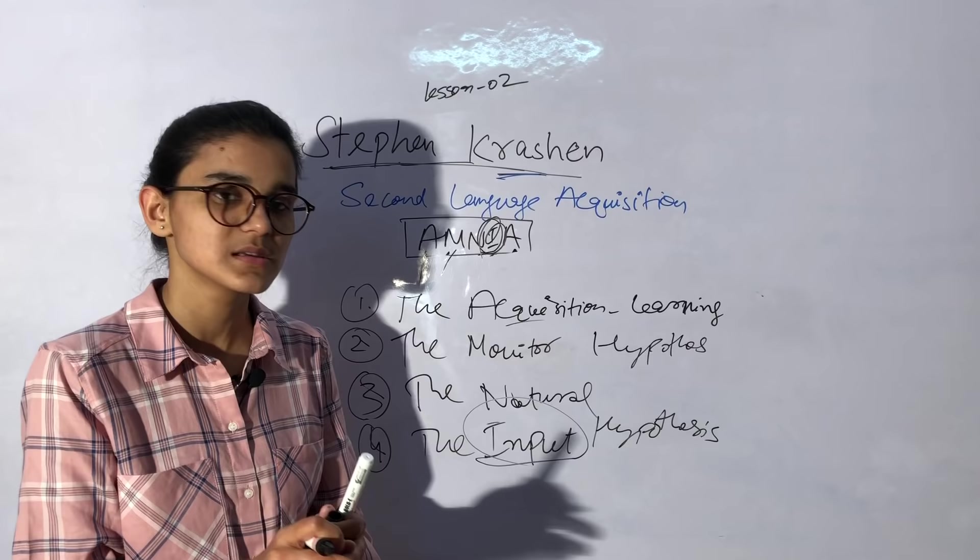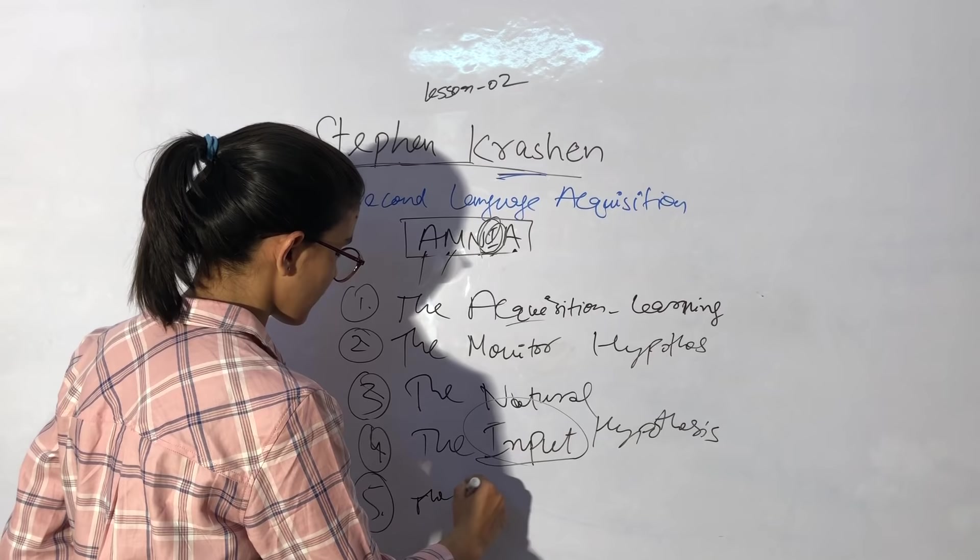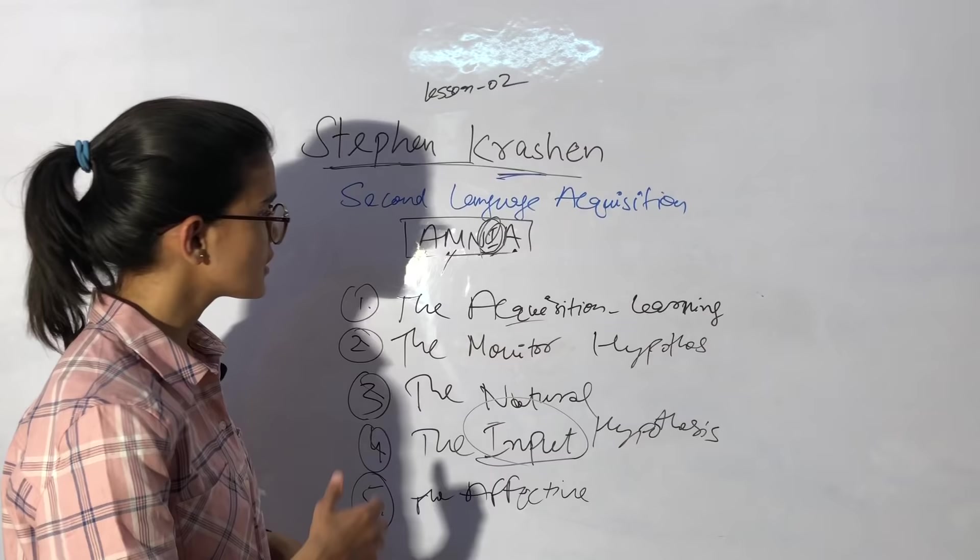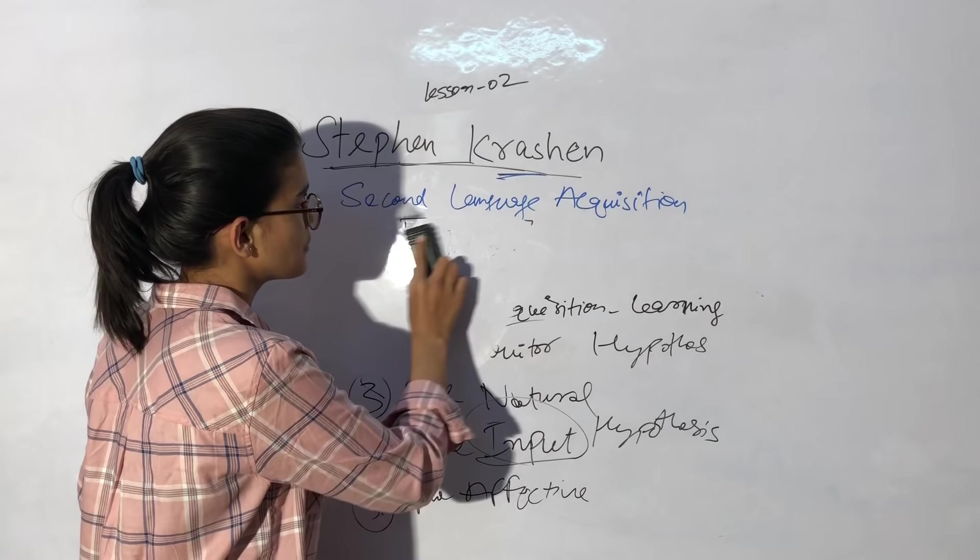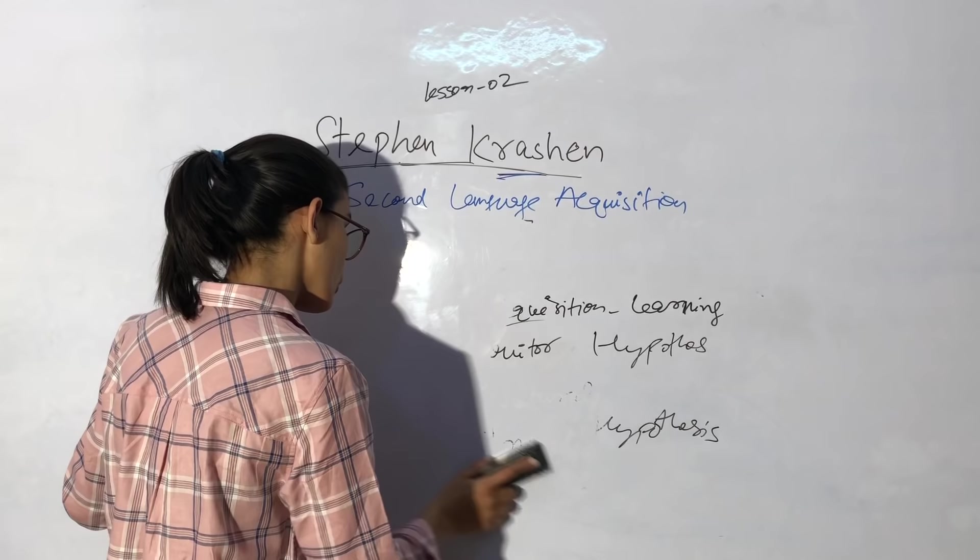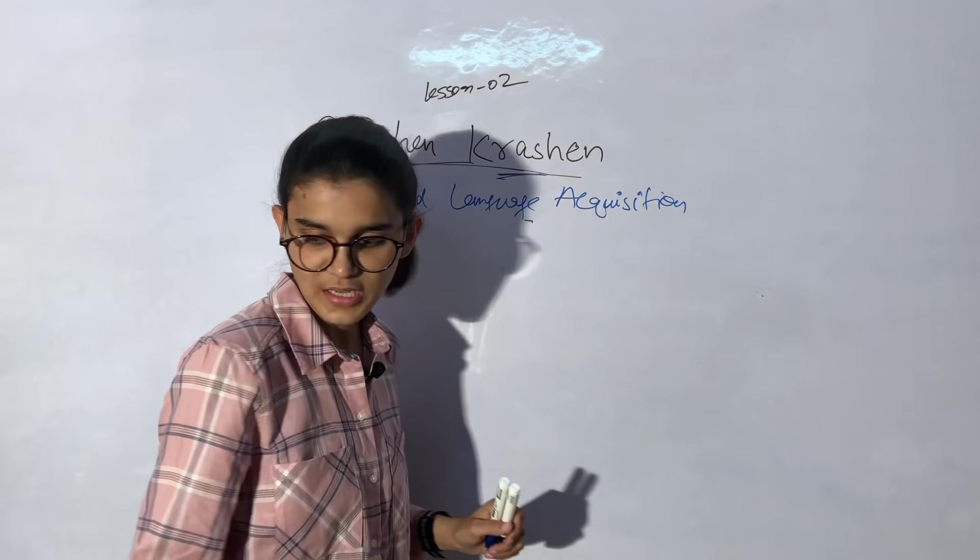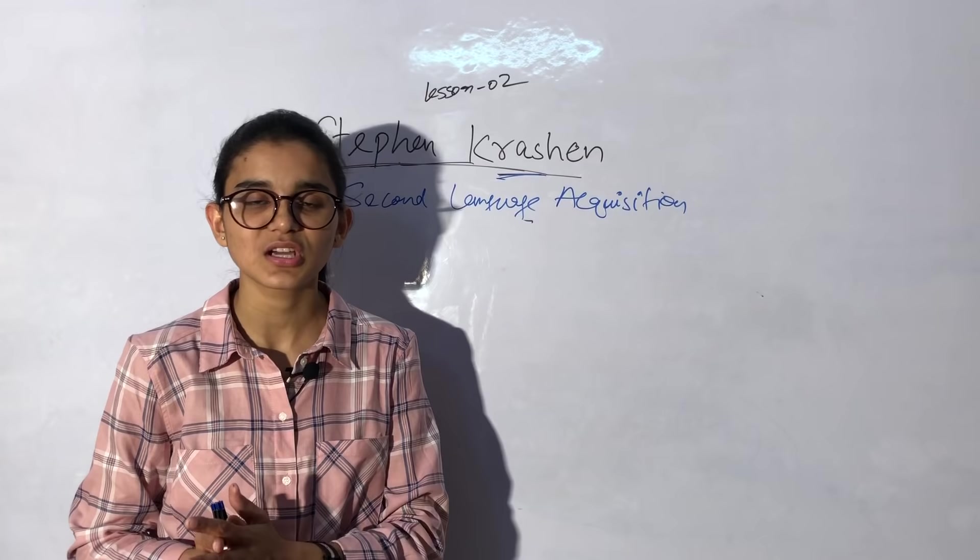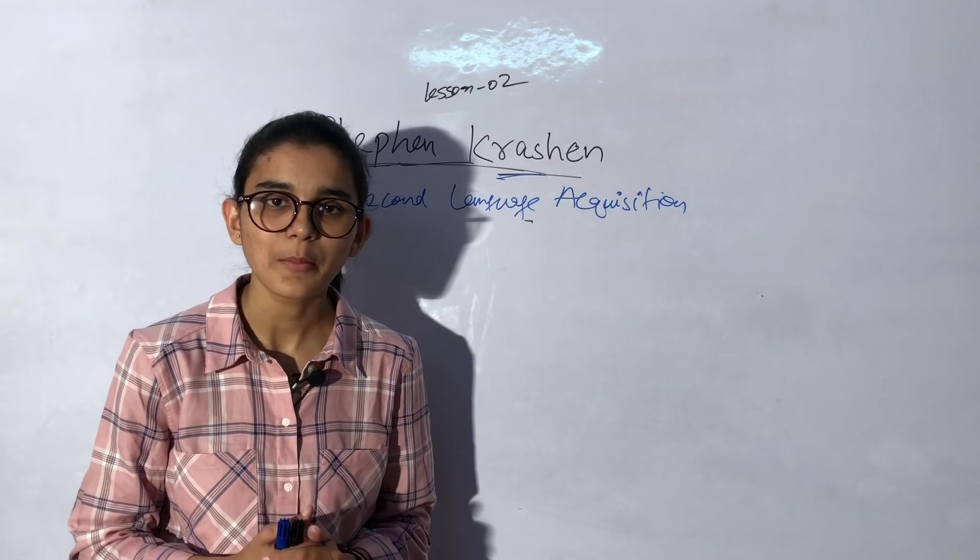Then, the last one, which we talked about - affective filter. If your emotional aspect is normal, it will be better. Your anxiety needs to be less, motivation and self-confidence need to be more. These are the main things that we studied about this theory. The main points are: communication with the target language, reducing anxiety and keeping students motivated, giving appropriate inputs wherever needed. That will monitor your language acquisition and learning. These are the main things we studied about this theory.